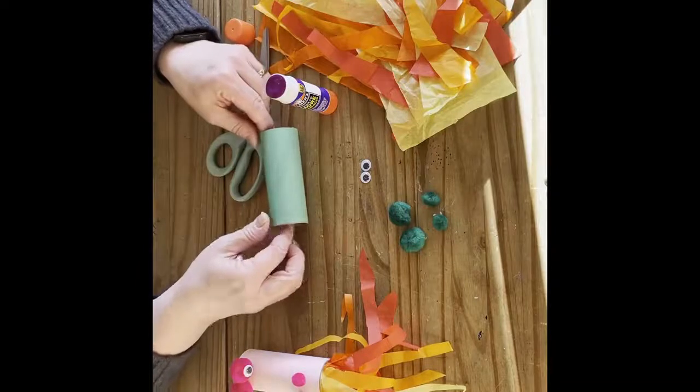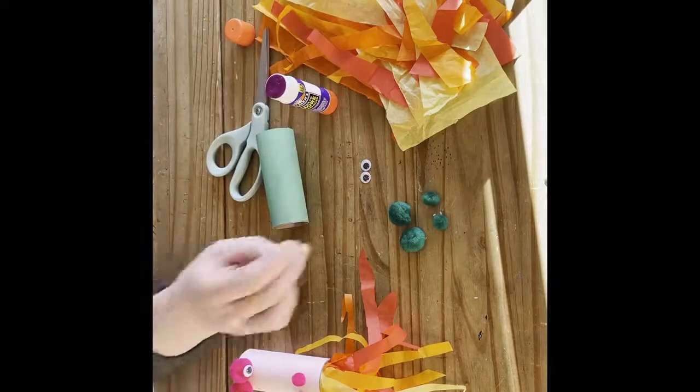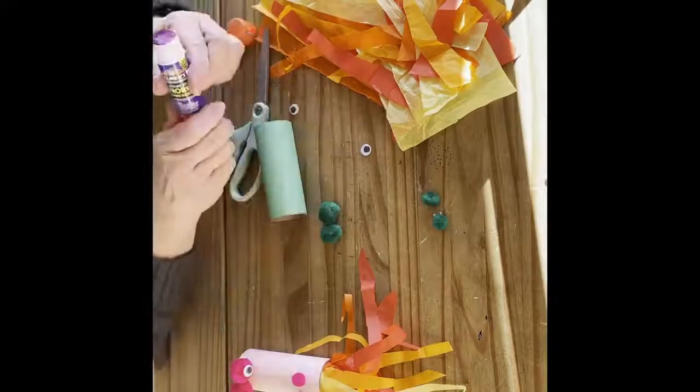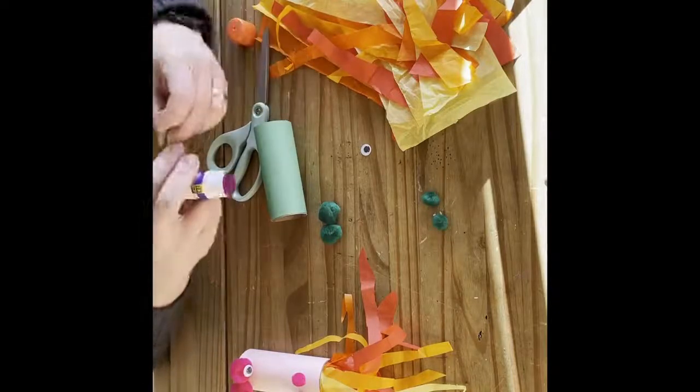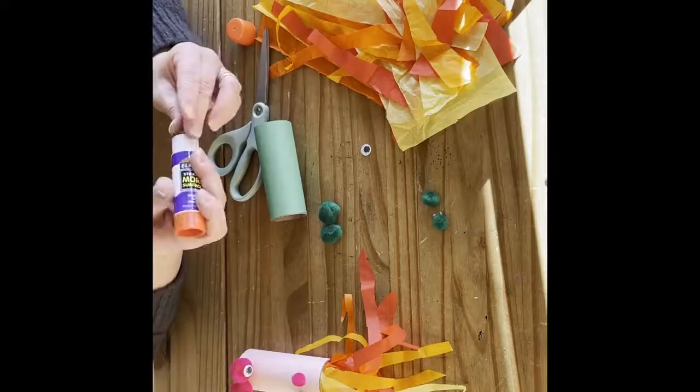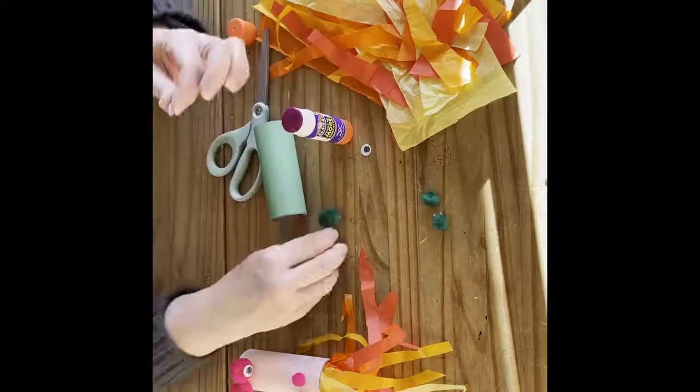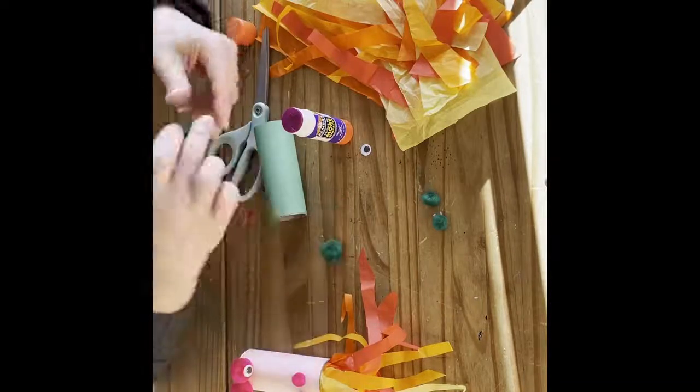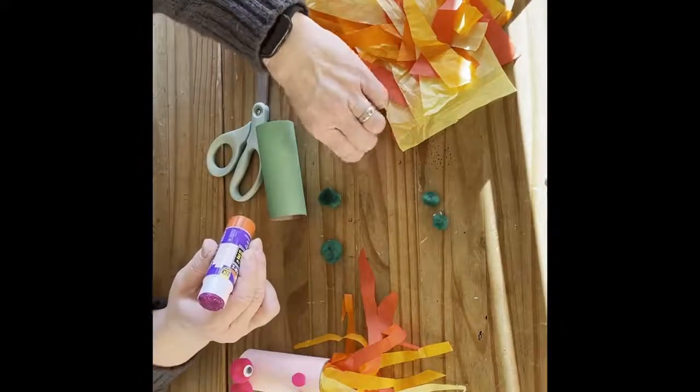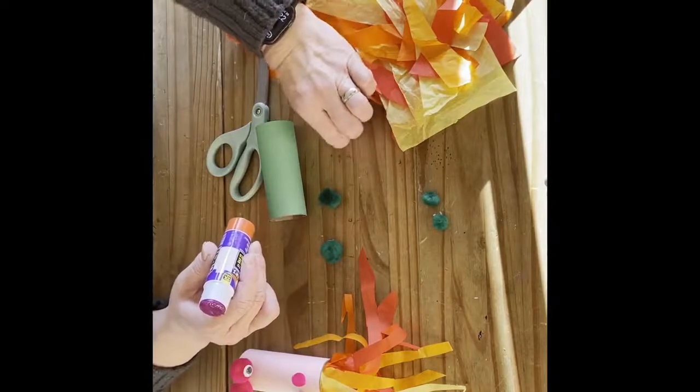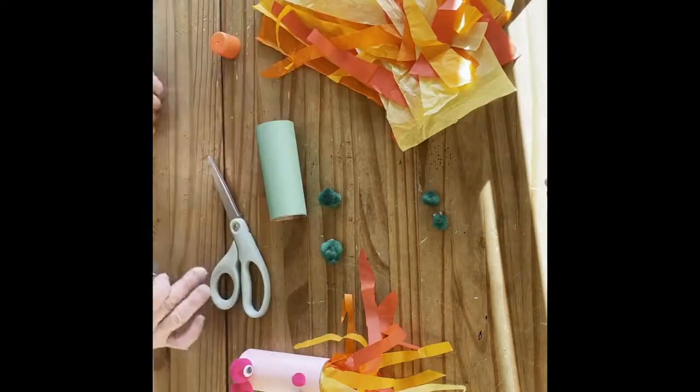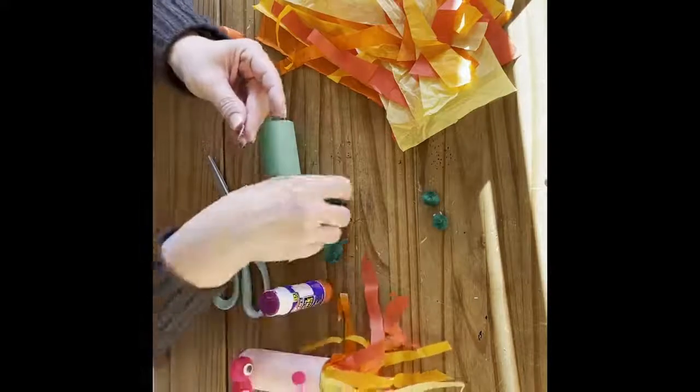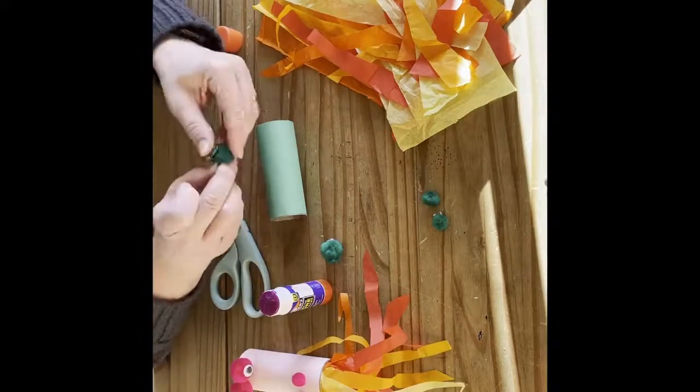The next thing that we need to do is make the eyes. I'll take the two bigger ones and I will add glue to the back side of the eyes and then apply it to the pom-pom. Here we go. And now let's do the other one.